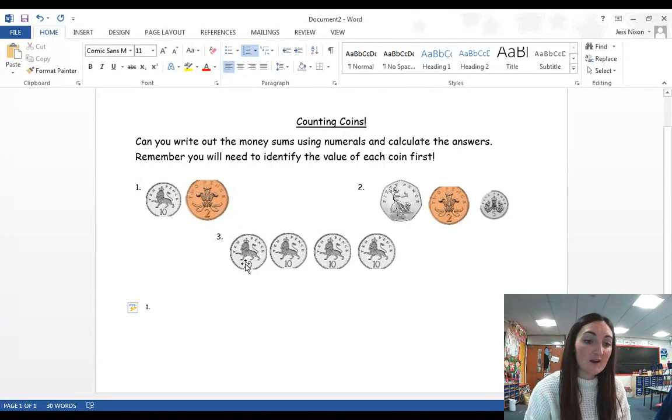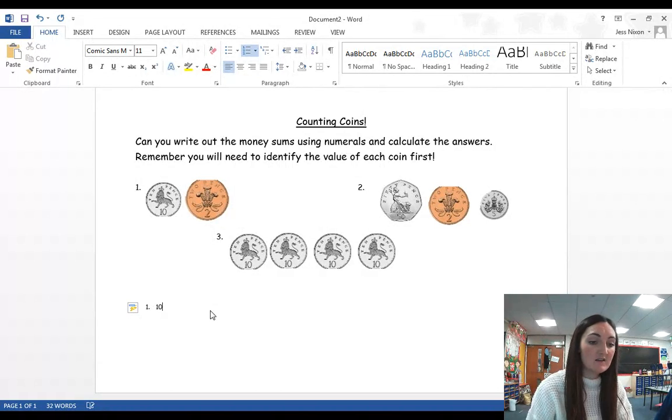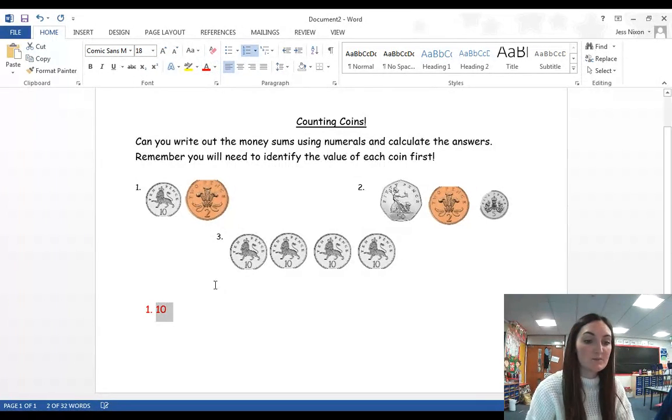I can see that my coin here, this coin, it's got the number 10 on it, 10 pence. I know my 10 pence is silver and round, so I'm going to write 10. Oops, not coming up in the right side.